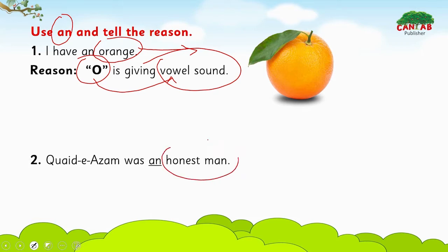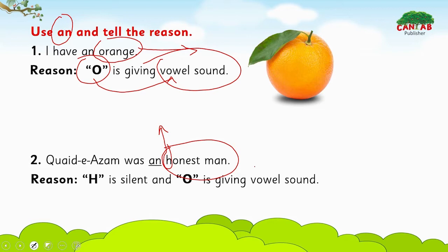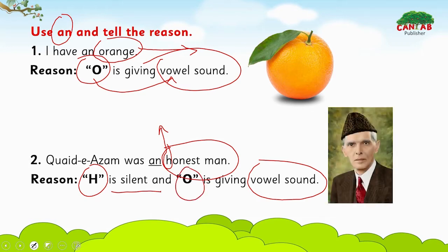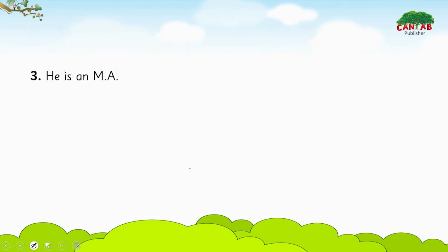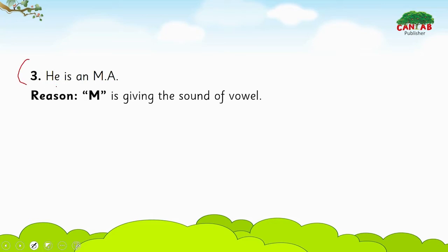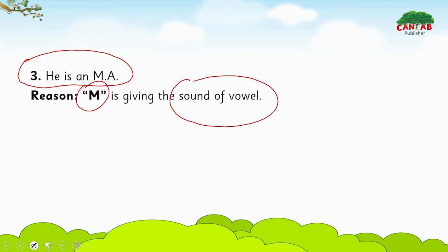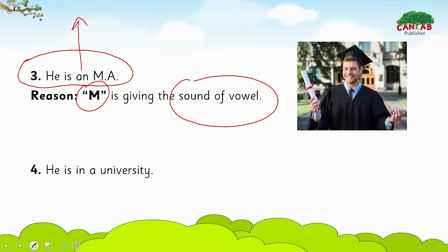In 'honest,' the sound of 'h' is silent, so it sounds like 'onest' — a vowel sound. Because 'h' is silent and 'o' is giving the sound, 'an' is used before 'honest.' So: 'Quaid-e-Azam was an honest man.' The next example is: 'He is an MA.' MA means Master of Arts. Here 'm' gives a vowel sound, that is why 'an' is used.